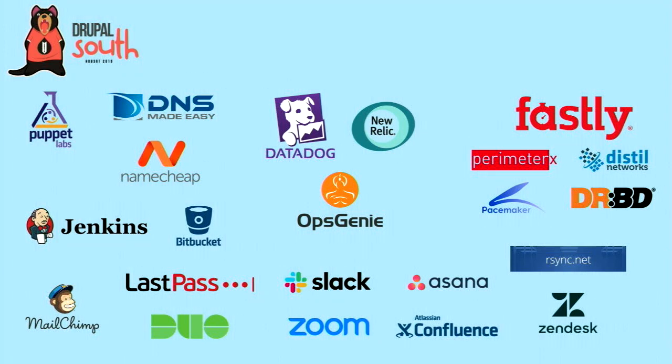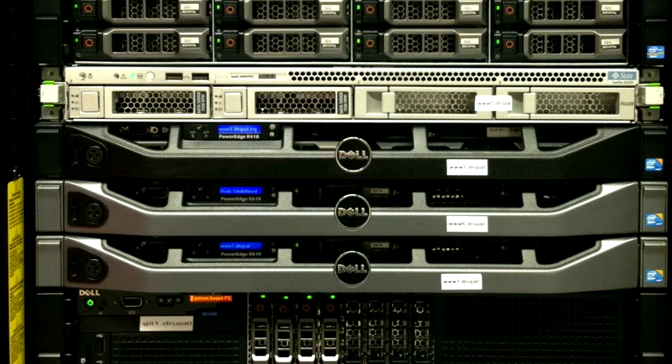We have all these services we use — a lot are free or they've given us a deal as a non-profit, but a few we just pay for because they're worth it. Stuff like Datadog for monitoring and logging, Slack and Zoom because we like talking to each other, and Zendesk for help@drupal.org. All of this runs on 11 physical servers — probably more, with a few powered off — at the Oregon State University Open Source Lab. We haven't needed to buy any in a few years. PHP updates and MySQL updates keep making things faster.